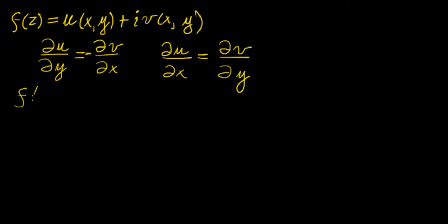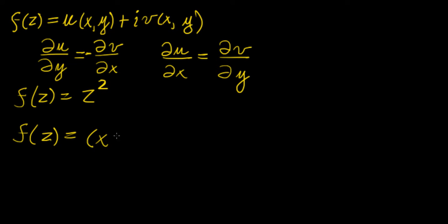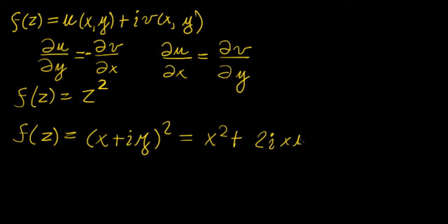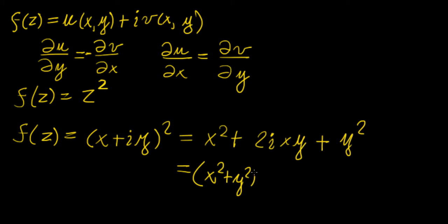We defined a few basic functions. If we have f(z) = z², that's the same as f(z) = (x + iy)², since we define the complex variable z as x + iy where x is the real part and y is the imaginary part. Squaring this gives x² + 2ixy + i²y², so the real part is x² − y² and the imaginary part is 2xy. We evaluate by plugging in a complex number like 1 + 2i.